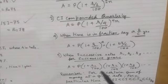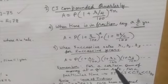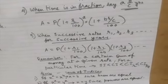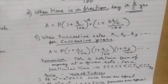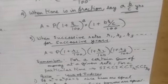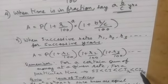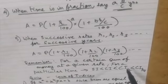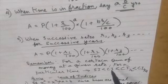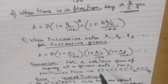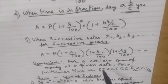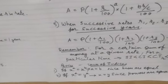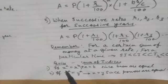For successive rates, if the rate is different for different years, use the successive rates formula. For a certain sum of money at a given rate and period, compound interest calculated quarterly is the highest, then compound interest half-yearly, then compound interest annually.